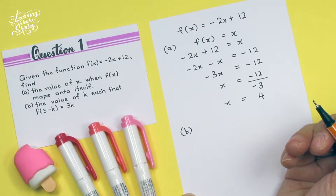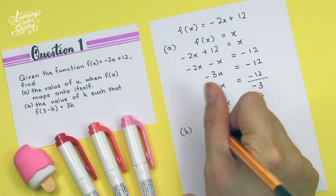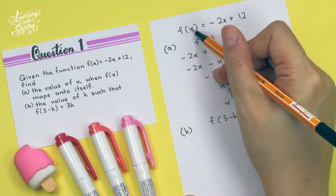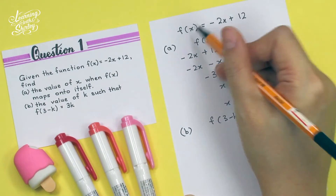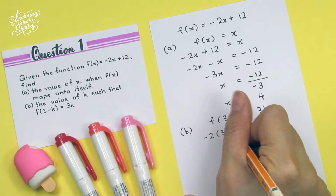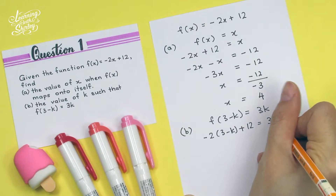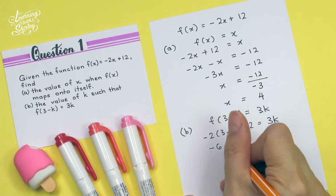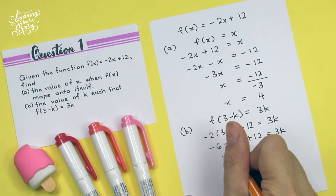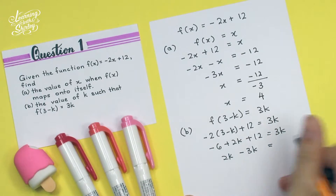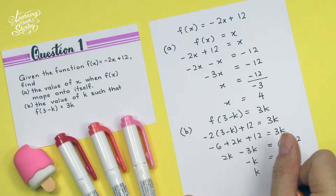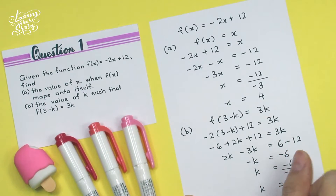To solve B, find the value of K such that F(3 minus K) equals to 3K. Looking back at the function, when X is the input, here will be X. So when the input is 3 minus K, here will be 3 minus K. So we substitute 3 minus K in: negative 2 times (3 minus K) plus 12 equals to 3K. Expanding: negative 6 plus 2K plus 12 equals to 3K. Rearranging: 2K minus 3K equals 6 minus 12. So negative K equals negative 6, therefore K is equal to 6.